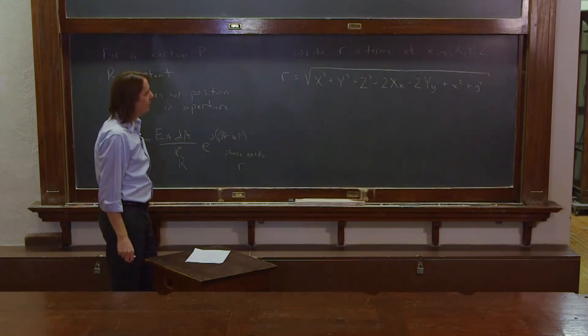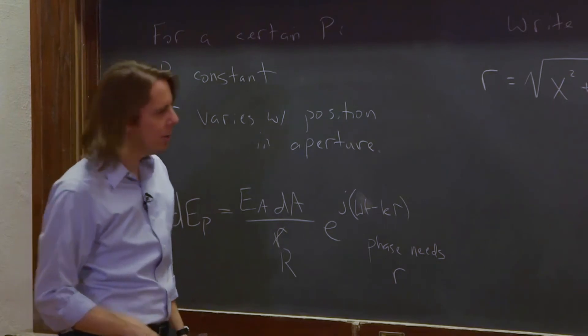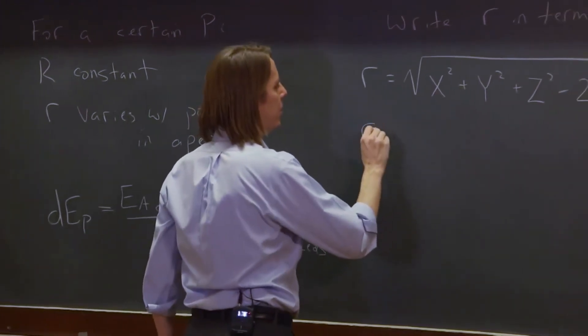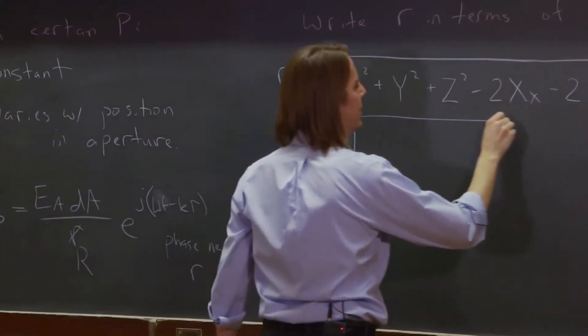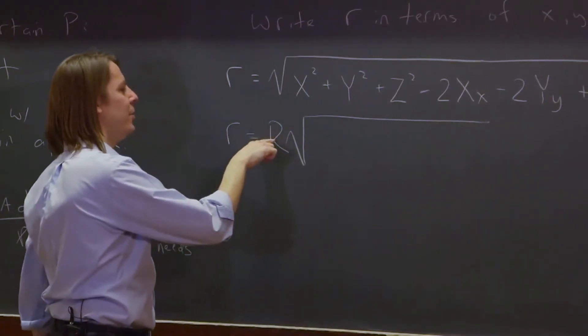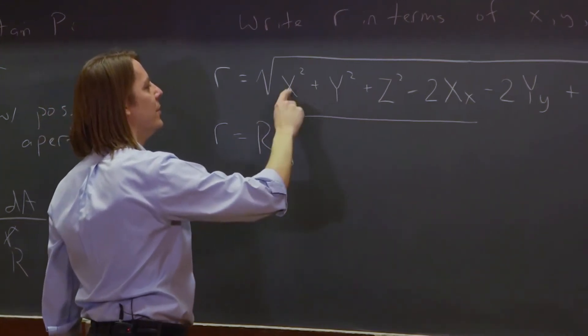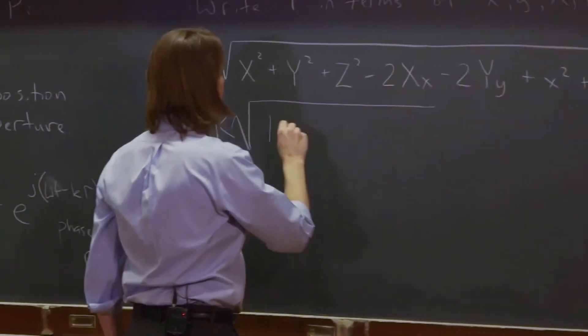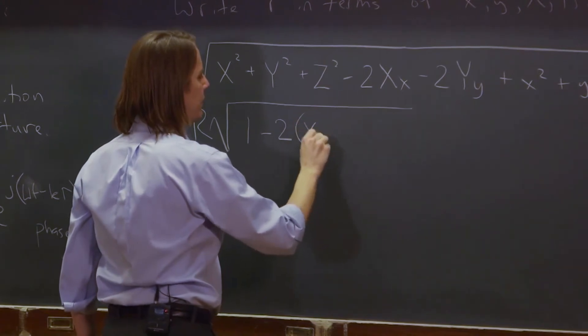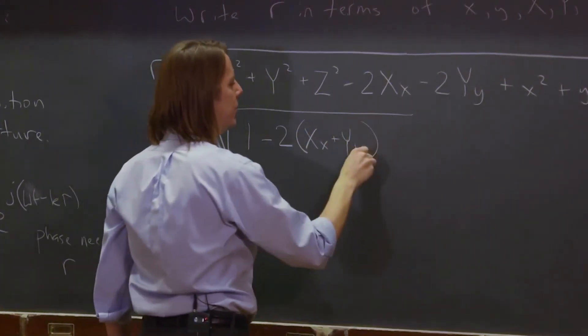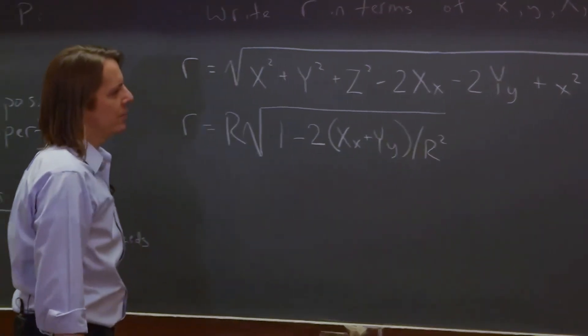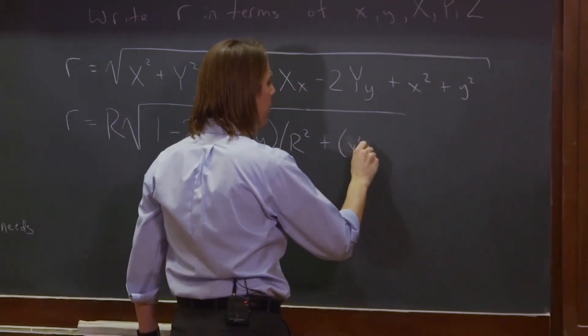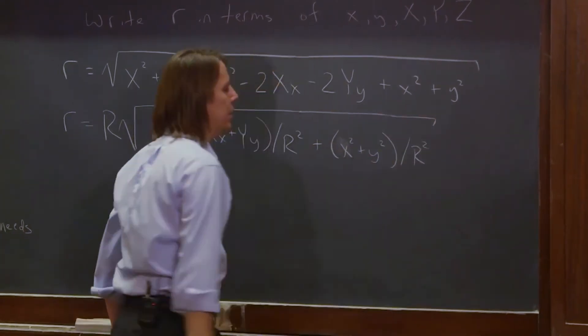And what are we going to do? We are going to pull out a big r. So little r equals big r times the square root of something. If we pull out a big r, that means we pulled out a big r squared out of here. This is big r squared - the x squared plus y squared plus z squared makes one. And then we have, these two both have a two in front of them, so we can write two times xx plus yy, the minus two goes there, that's divided by r squared. And then we have the plus little x squared plus little y squared divided by r squared, like that.